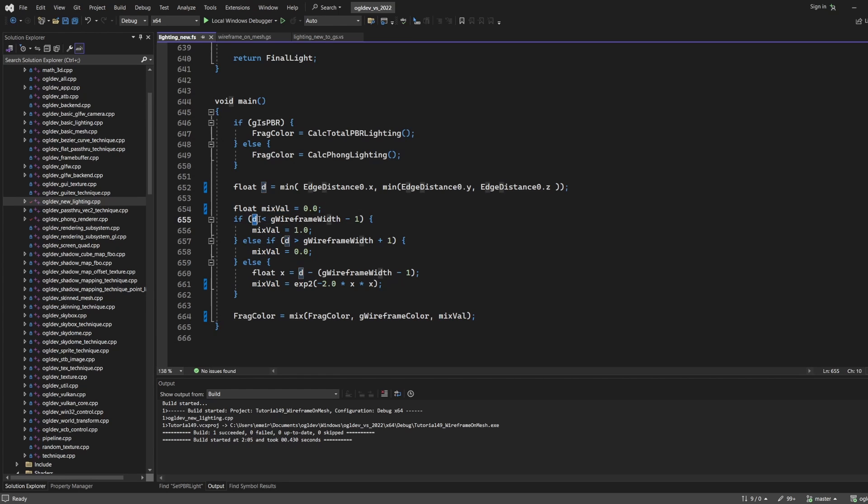If the distance to the closest edge is less than the requested line width minus one pixel, we set the interpolating term to one, which will set the final color to the wireframe color. If the distance is greater than the line width plus an extra pixel, we set the interpolating term to zero so the final color will come from the lighting system. Anything within the remaining range of two pixels will be smoothly interpolated using the exponent function. You can use different functions here; I'm simply using the same function that was used in the book.